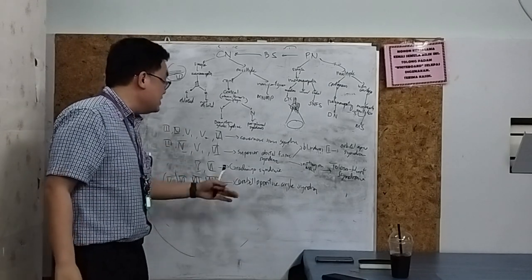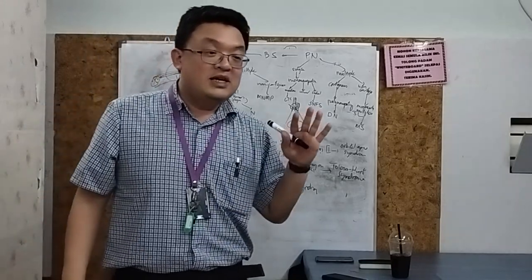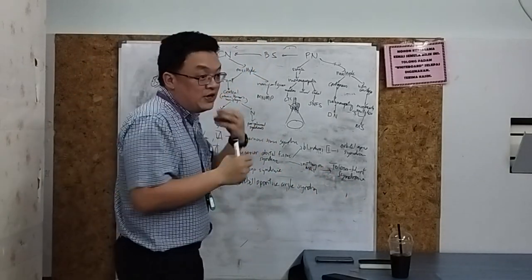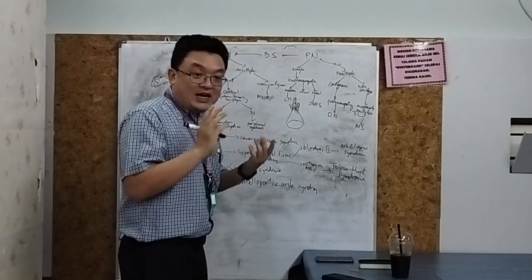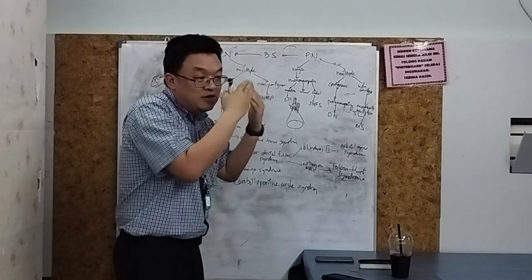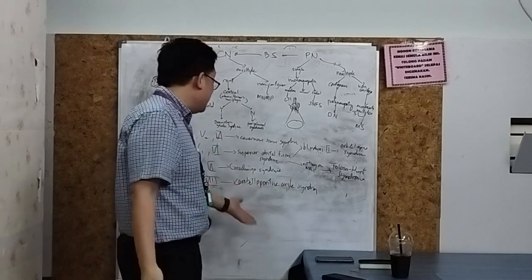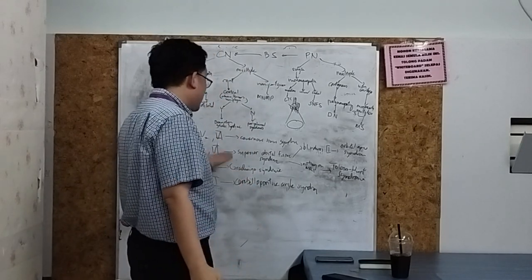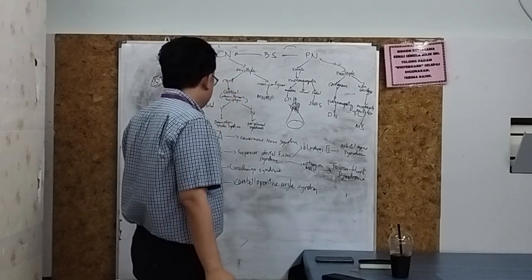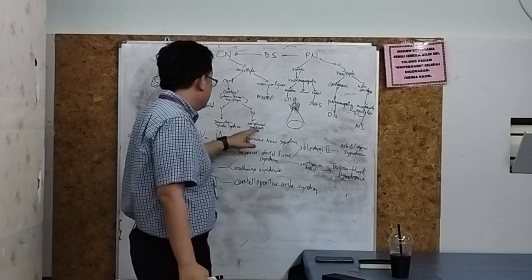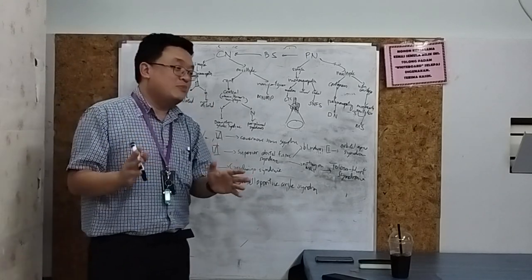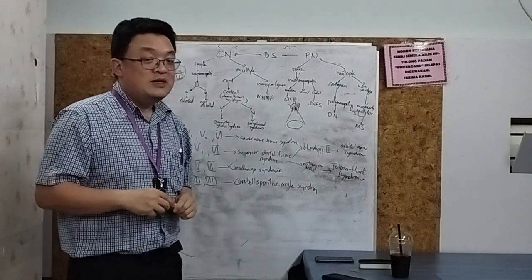How do you differentiate cerebellopontine angle syndrome from brainstem stroke? In CPA syndrome, all the affected structures are pre-pyramidal, so there is no hemiparesis, no contralateral hemiplegia, and no ataxia from the cerebral peduncle. There is no Horner's. So there are no central lesion features — this is a peripheral nerve syndrome.